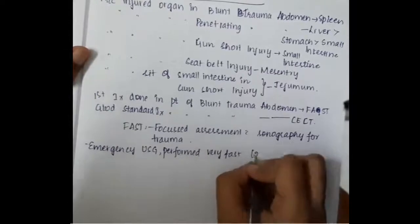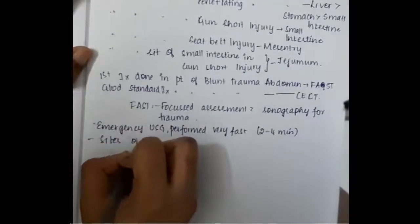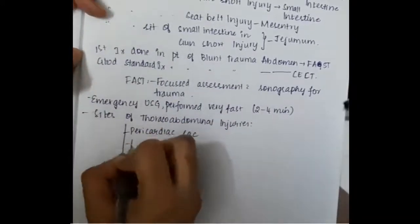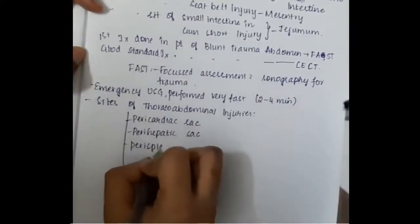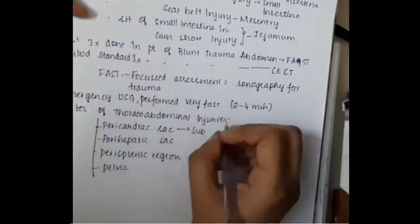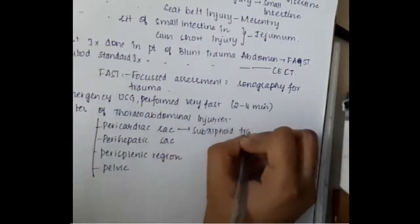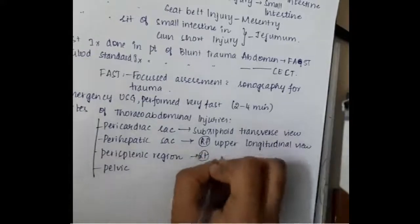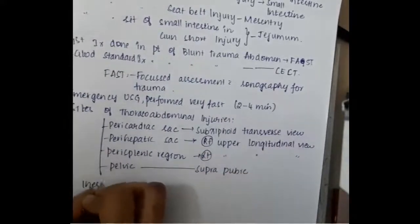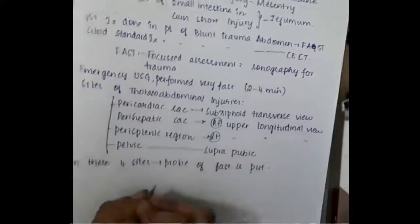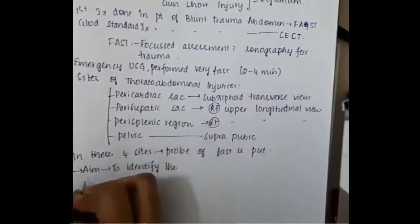FAST is an emergency ultrasound performed very fast within 2-4 minutes. The sites assessed include: 1. Pericardiac Sac, 2. Perihepatic region, 3. Perisplenic Region, 4. Pelvic Region. The Pericardiac Sac uses Subxiphoid Transverse View, Perihepatic region uses Right Upper Longitudinal View, Perisplenic Region uses Left Upper Longitudinal View, and Pelvic Region uses Suprapubic View.